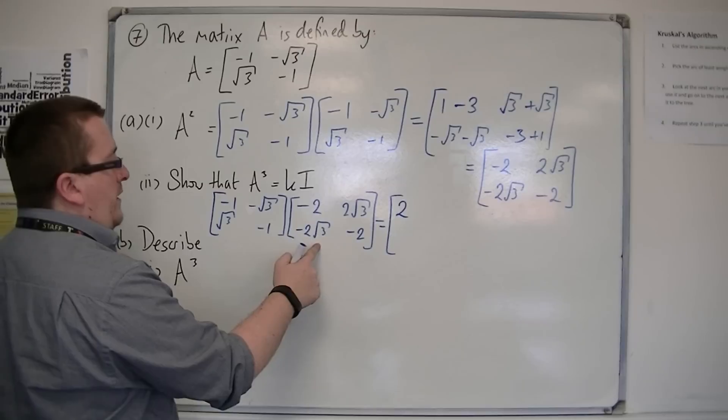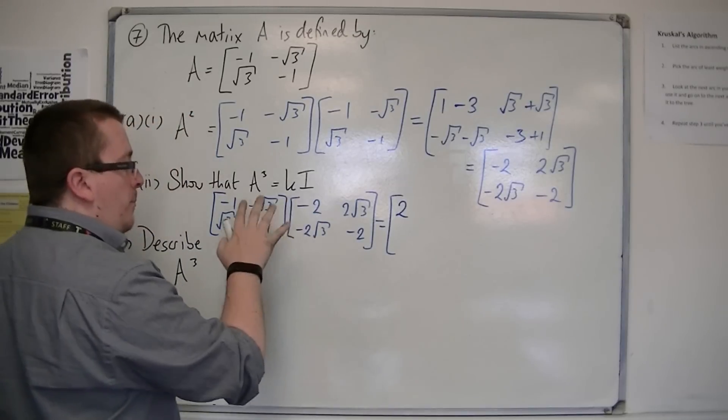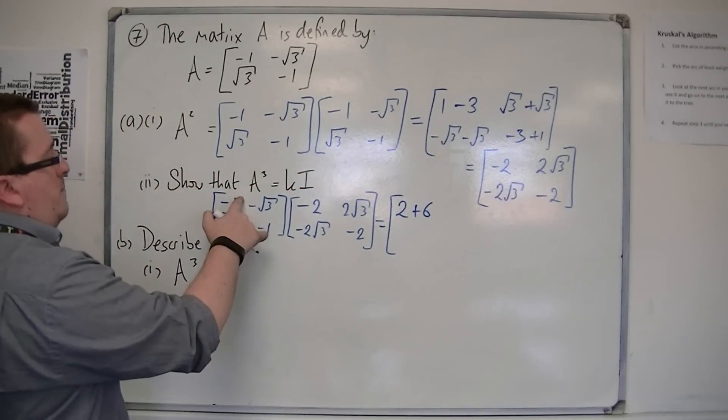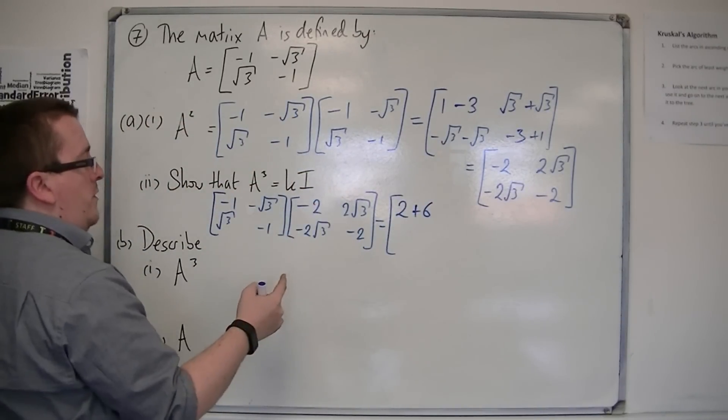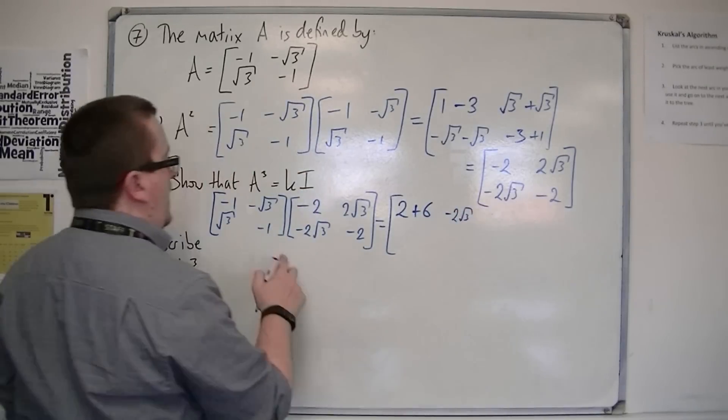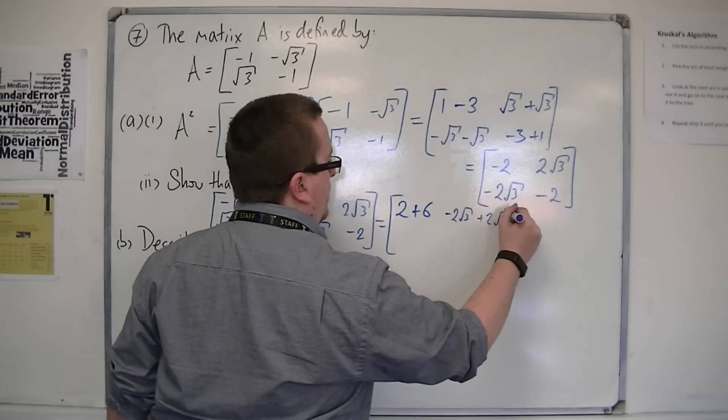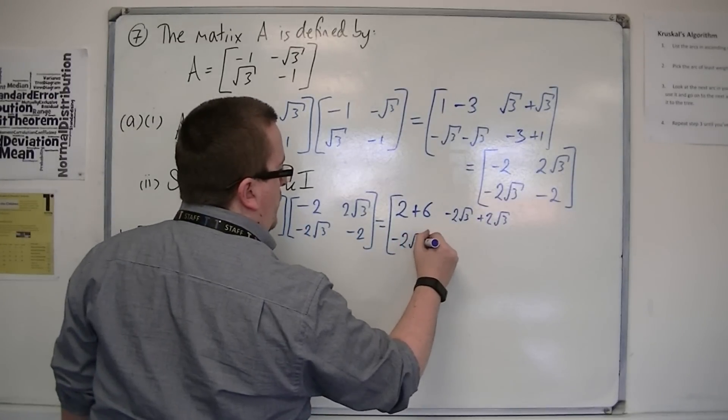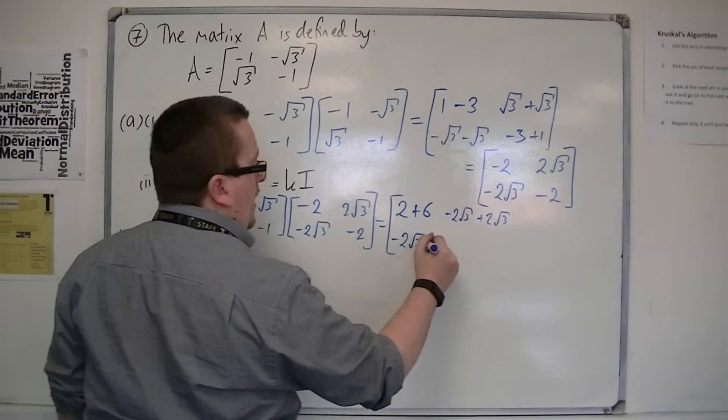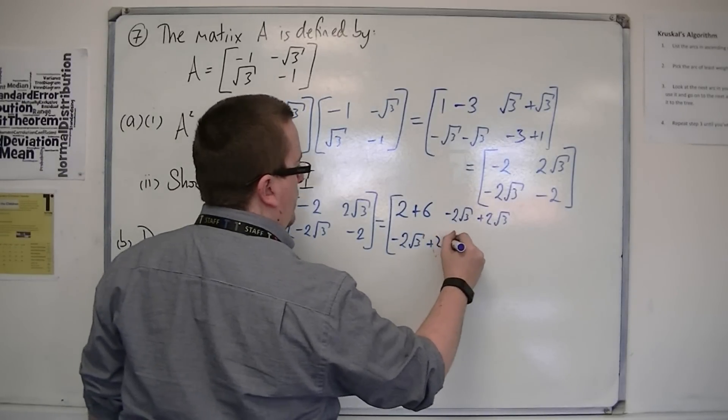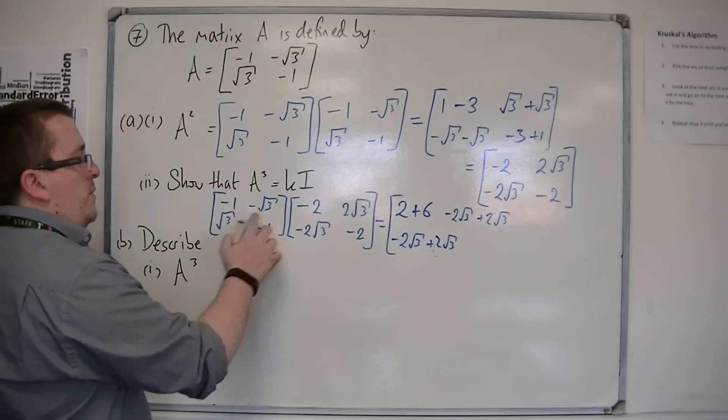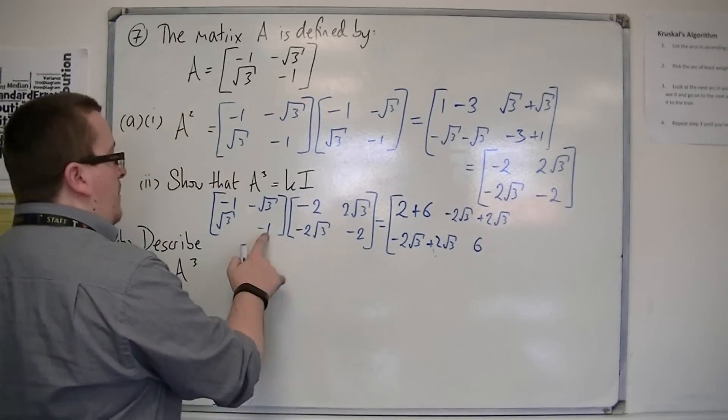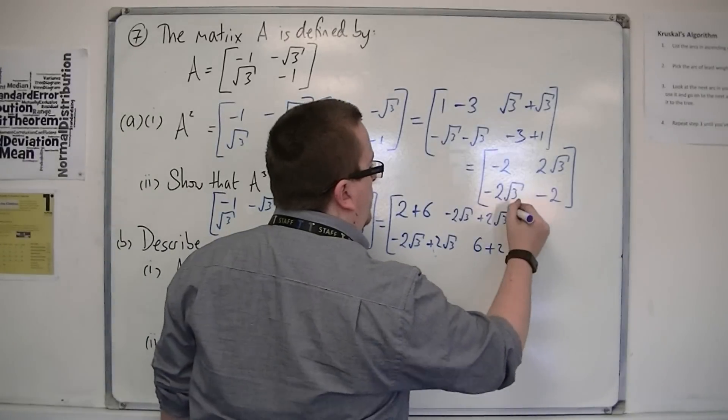Then, we've got minus root 3 times minus 2 root 3, so that's going to be plus 2 times 3, so plus 6. We're going to have minus 1 times 2 root 3, so minus 2 root 3. And then, we're going to get a plus 2 root 3. Then, we've got a root 3 times minus 2, so minus 2 root 3. And then, we're going to get a plus 2 root 3. And then, we've got, finally, root 3 times 2 root 3, so 2 times 3, so 6. And, minus 1 times 2, so plus 2.